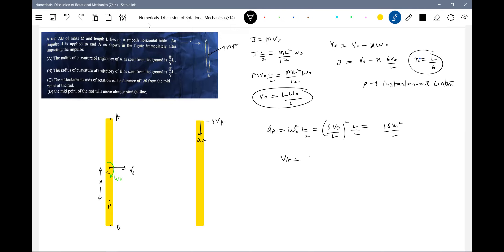Then what is the velocity of point A? Velocity of point A should be equal to v_naught plus l by 2 omega naught. l omega naught will be 6 v_naught, this will be 3 v_naught, so 4 v_naught will come.